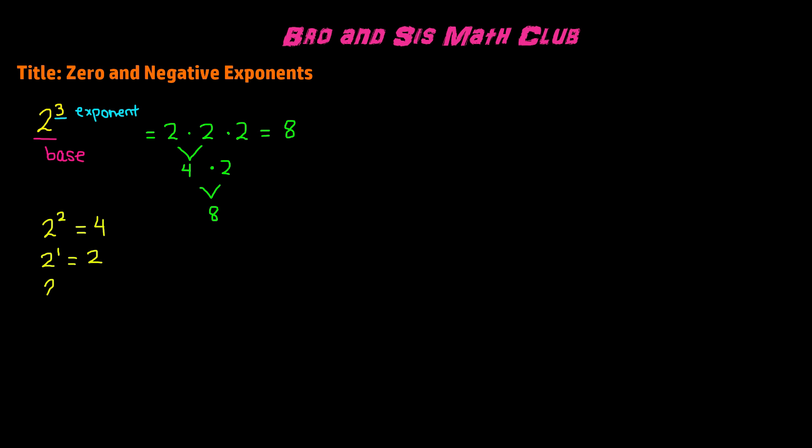Now let's say we have 2 to the power of 0. The zero exponent property states that any number to the power of 0 is equal to 1. So 2 to the power of 0 equals 1. Even 1 million to the power of 0 would still equal 1. Now if you examine these values closely, there's a pattern within these exponents.